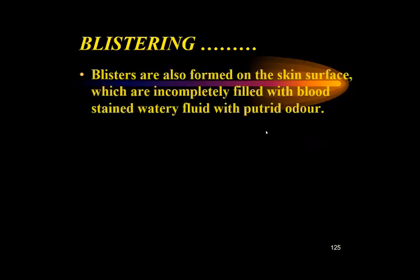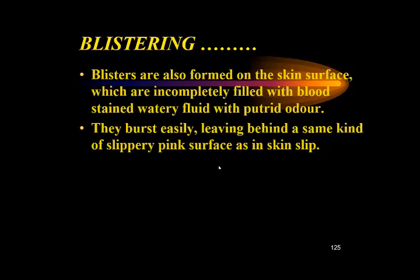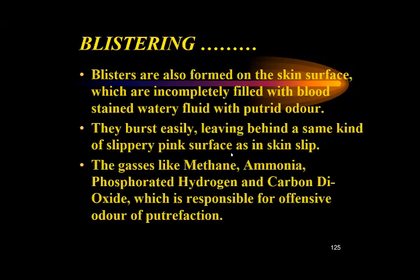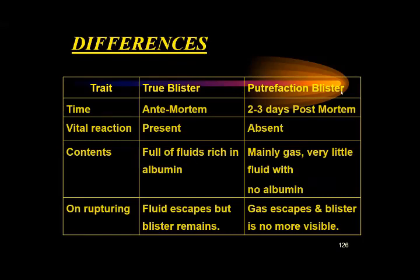Blisters are formed on the skin surface, incompletely filled with blood-stained watery fluid with a putrid odor. They burst easily, leaving behind the same moist pink surface as in skin slip. The gases involved — methane, ammonia, phosphorated hydrogen, and carbon dioxide — are responsible for the offensive odor of putrefaction. A true blister occurs 2–3 days post-mortem and shows vital reaction, whereas a putrefactive blister has no vital reaction. The true blister fluid is rich in albumin; the putrefactive blister contains mainly gas and very little fluid with no albumin. On rupturing, fluid escapes from a true blister, but gas escapes from a putrefactive blister and the blister becomes invisible.